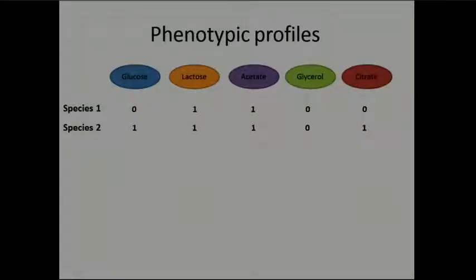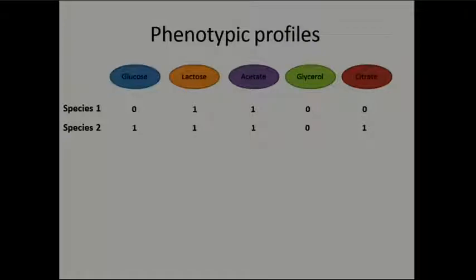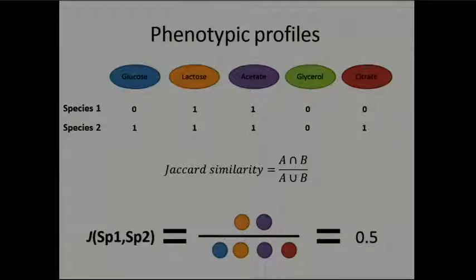The first thing we look at is the ability to use different nutrients for growth. We tested hundreds of molecules; in principle, for each species we predict if each molecule can allow the bacterium to grow. This can be represented as a binary phenotypic vector. We calculated these vectors for all 322 bacteria, compared them using Jaccard similarity — basically the overlap between two vectors. For example, two species sharing two carbon sources out of four total gives a Jaccard similarity of 0.5.